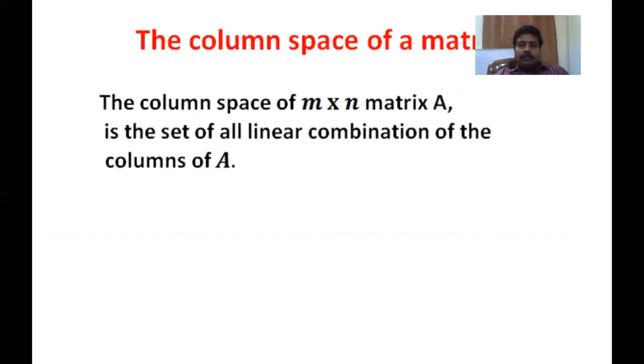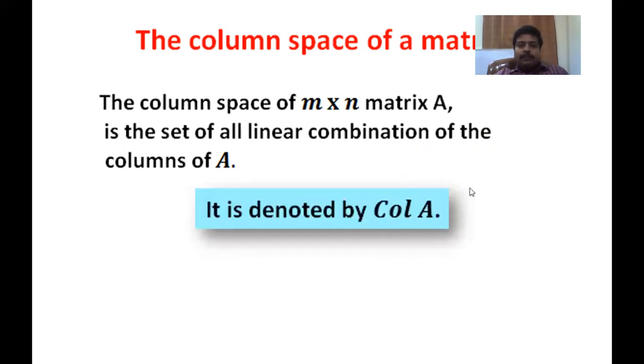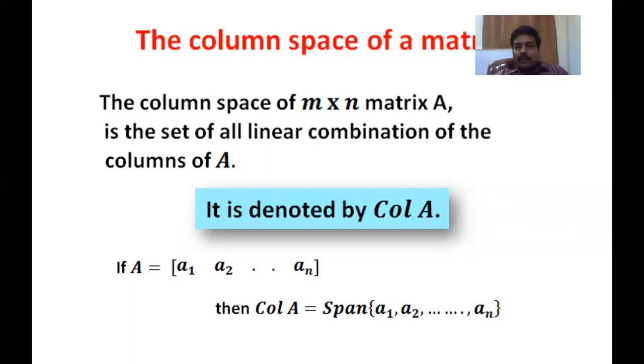The column space is the set of all linear combinations of columns of matrix A, denoted col(A). If A = [A1, A2, ... An] where A1, A2, ... An are the columns of the matrix, then col(A) is the span of these column vectors. In the last video, we discussed the properties of null(A) and col(A) in detail.